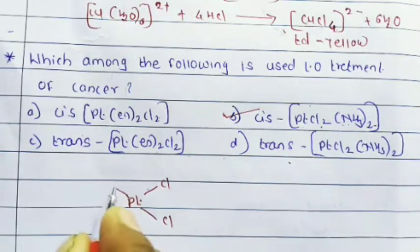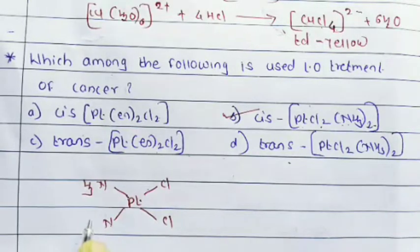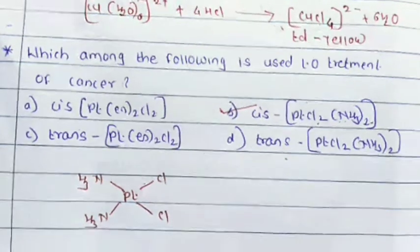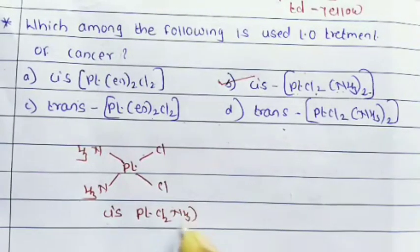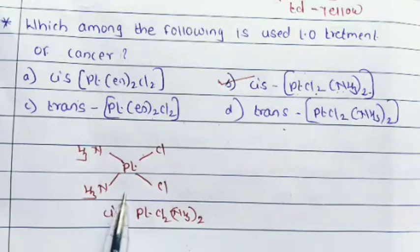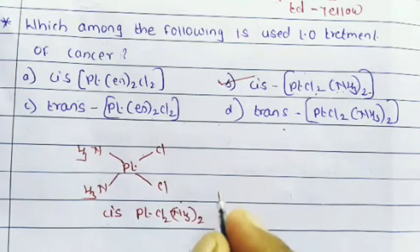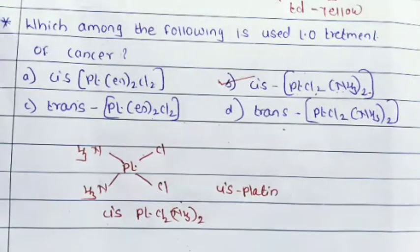In the cis form, the two Cl atoms are on the same side and the two NH₃ groups are also on the same side. This is called cis-[PtCl₂(NH₃)₂], and this cis form of platinum is used for treatment of cancer. It is also called cisplatin.